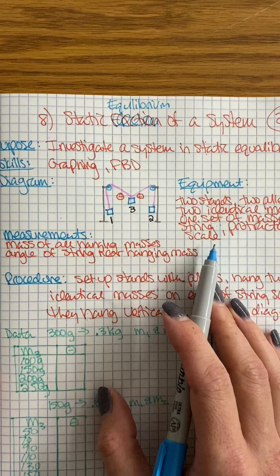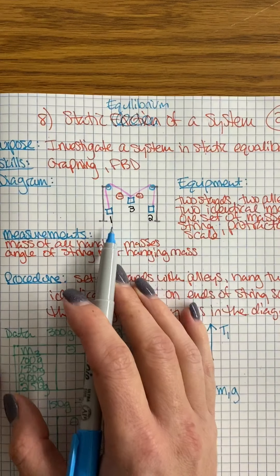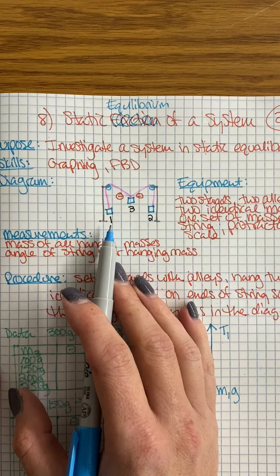String, protractor, scale. I didn't end up using a scale because the masses have the values on them.